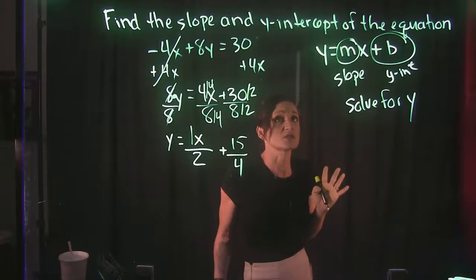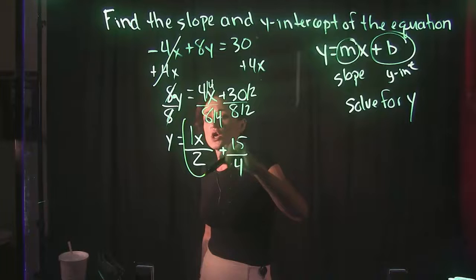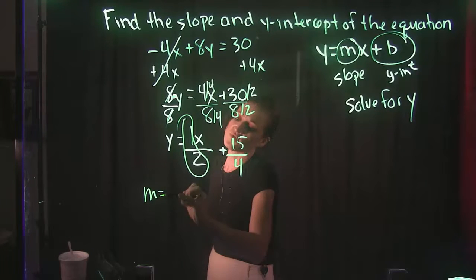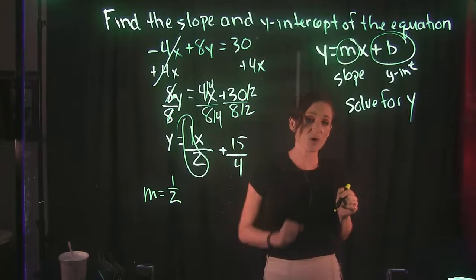So they want us to state the slope and the y-intercept. Taking a look at our equation, the coefficient of x is our slope. So in front of x, we have a positive 1/2. So that is our slope.